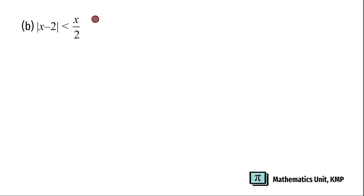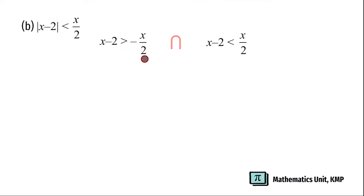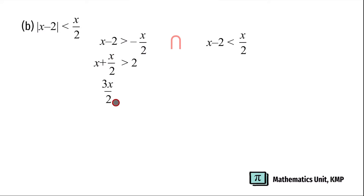Absolute value of x minus 2 less than x over 2. For the first step, define: x minus 2 greater than negative x over 2, intersect with x minus 2 less than positive x over 2. Bring negative x over 2 to the left-hand side to get x plus x over 2, and bring negative 2 to the right to get greater than positive 2. Multiply x by 2 over 2 to equalize the denominator, giving 2x. So 2x plus x over 2 gives 3x over 2 greater than 2. Multiplying both sides by 2 over 3, we get x is greater than 4 over 3.